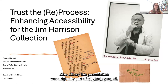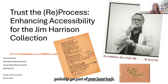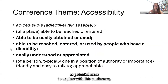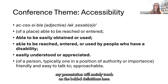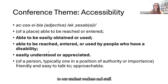This presentation was originally part of a lightning round, so I apologize that this talk won't take as long, but you'll probably get part of your hour back. This year's conference theme is accessibility. The following definitions of accessible were provided as potential areas to explore within this conference. My presentation will mainly touch on the bolded definitions — making the Jim Harrison Collection able to be more easily used, its arrangement more easily understood, and making it more physically accessible to student workers and staff.